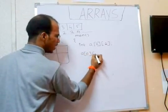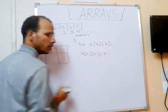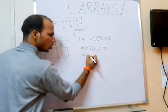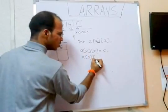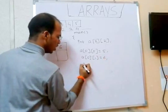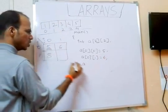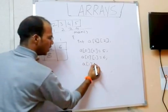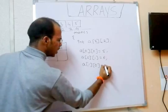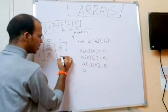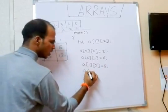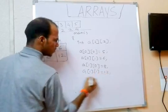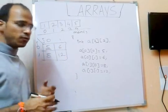To store values: if I want to save 5 at row 0, column 0, it's 'a[0][0] = 5'. To save 6 at row 0, column 1, it's 'a[0][1] = 6'. To store 8 at row 1, column 0, it's 'a[1][0] = 8'. To store 21 at row 1, column 1, it's 'a[1][1] = 21'. This is how you store values in a 2D array.